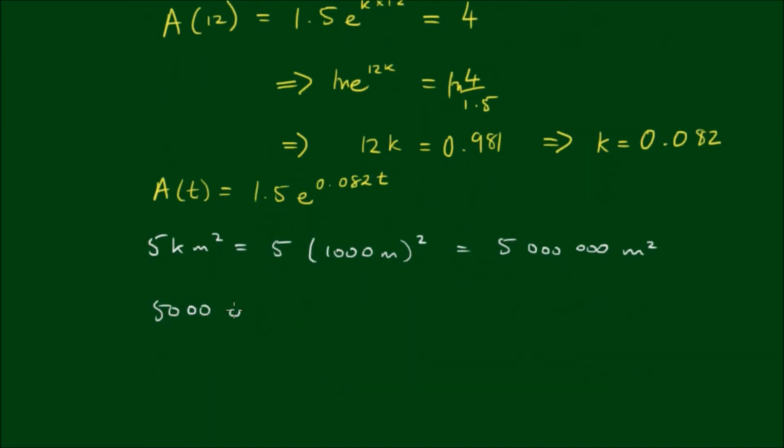If we have 5,000,000 meters squared given our equation, how long will it take to get there? So simply then rearranging for T we've got E to the 0.082 T equals 5,000,000 divided by 1.5.